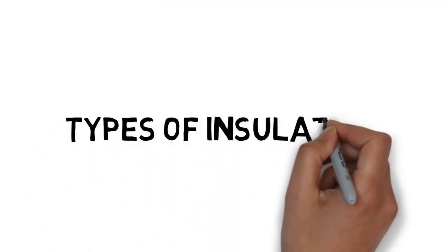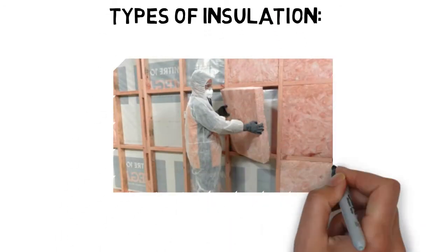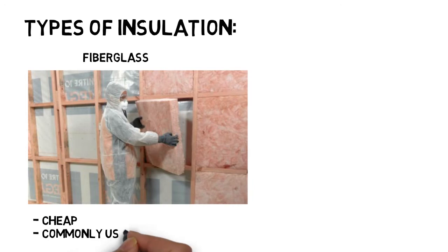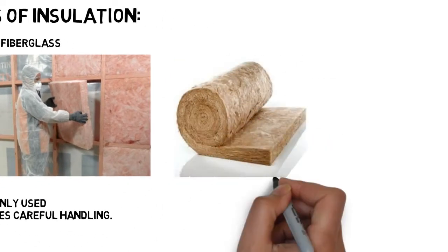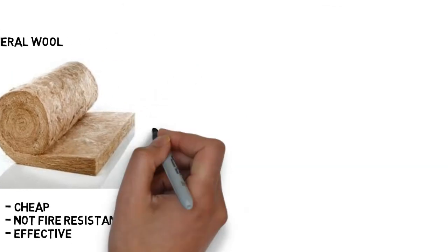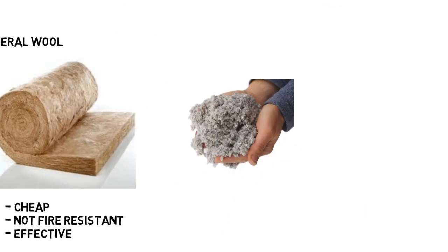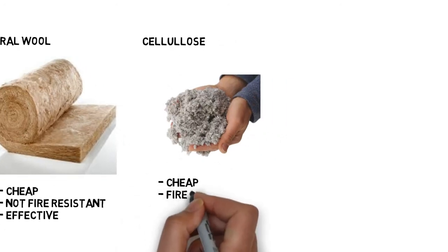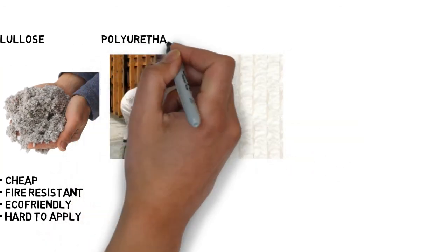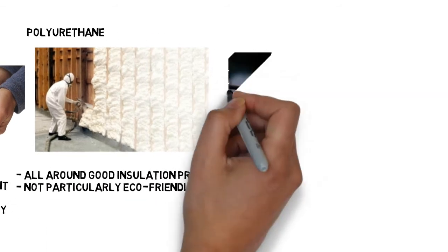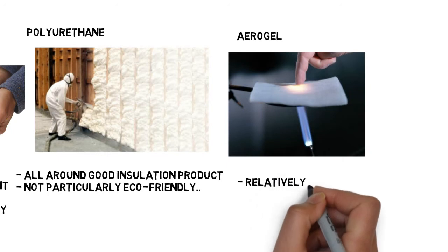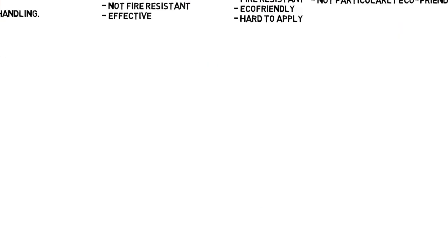Just like with anything else, there are a lot of different materials to insulate your home. Here are the most important ones. Fiberglass is cheap and commonly used but requires careful handling. Mineral wool is cheap and effective but it is not fire resistant. Cellulose comes from recycled paper — it is fire resistant, eco-friendly, and effective, but it is a little bit hard to apply. Polyurethane is an all-around good insulation product, though not particularly eco-friendly. Aerogel is a relatively new material — it is the most expensive one but definitely the best type of insulation, and it is only used in high-demand applications.